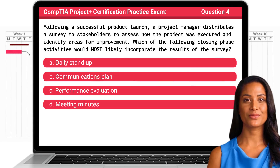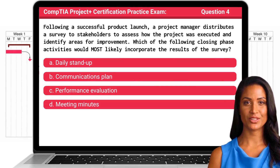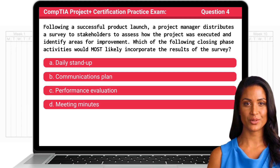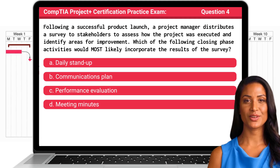Question 4. Following a successful product launch, a project manager distributes a survey to stakeholders to assess how the project was executed and identify areas for improvement. Which of the following closing phase activities would most likely incorporate the results of the survey?